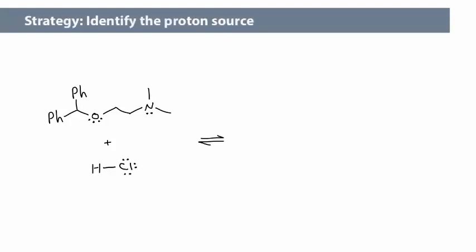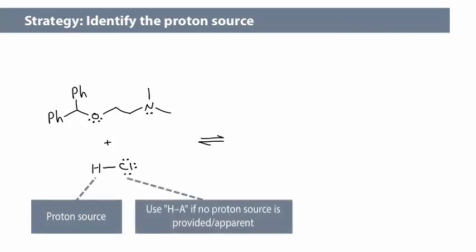Because we don't just have protons floating around in solution, the proton is going to start out on another molecule, hydrochloric acid in this case. If we don't know the identity of the acid, we can use a generic molecule, HA.